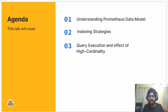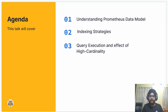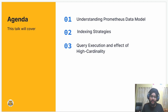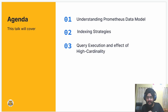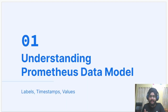This talk will cover three topics. We'll start with understanding the Prometheus data model, then learn about the indexing strategies that Prometheus uses to index its data, and finally learn the query execution flow with the help of Prometheus indexing strategies that we learned in part two, and the effect of high cardinality on it. Let's begin with understanding the Prometheus data model.